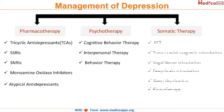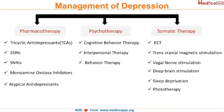When we talk about somatic therapy, we have ECT — that is electroconvulsive therapy — transcranial magnetic stimulation, vagus nerve stimulation, deep brain stimulation, sleep deprivation, and phototherapy.